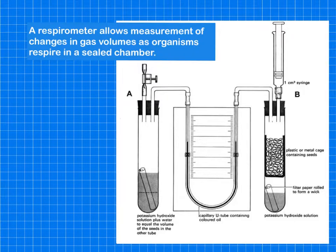So respirometers come in different types and different sizes, all the way from one tube to a tube that is large as a room. And it allows the measurement of changes in gas volumes as organisms respire in a sealed chamber. So you can see, in this case, the sealed chamber here is in B.